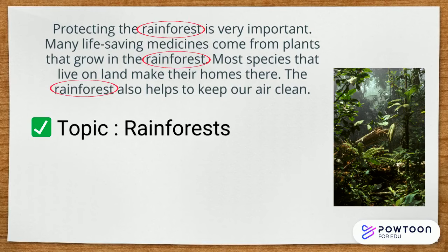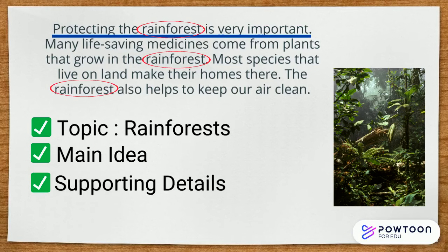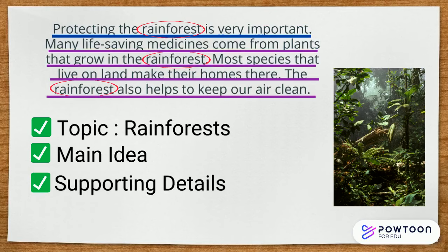Now, for the main idea. What are they trying to prove about rainforests? Well, protecting the rainforest is very important. And finally, what reasons or supporting evidence do they give? That would be in these other sentences. Many life-saving medicines come from the rainforests. Most species that live on land make their homes there. And that the rainforest keeps our air clean.